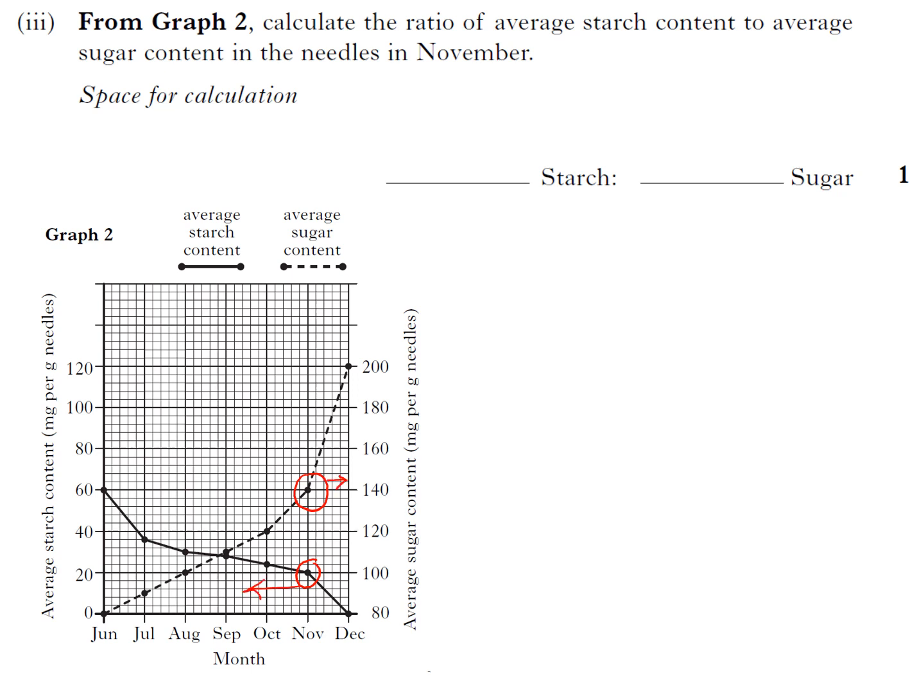But I'm going to read the starch that way and the sugar this way. So the starch is 20 and the sugar is 140. You are not going to get the mark for that because you're going to have to cancel down. That's your mark: 1:7.